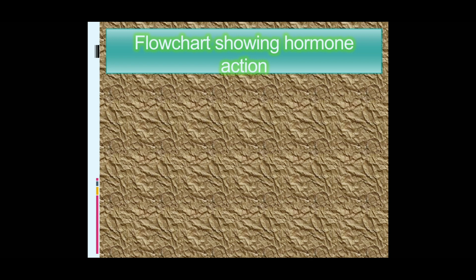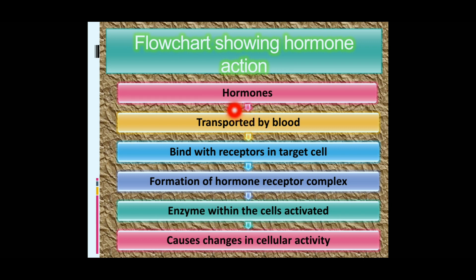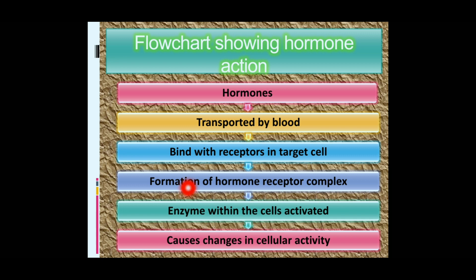This is the flowchart showing hormone action: hormones are transported by blood, bind with receptors in the target cell, forming a hormone-receptor complex. The enzymes within the cells are activated, and finally this causes changes in cellular activity. When hormones reach the target cell, the receptors receive them, form a hormone-receptor complex, produce certain enzymes, and those enzymes cause changes in cellular activity.